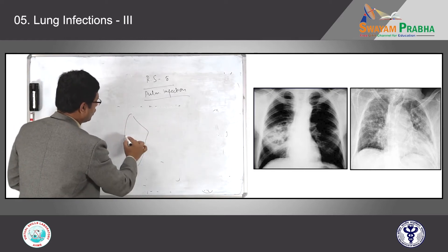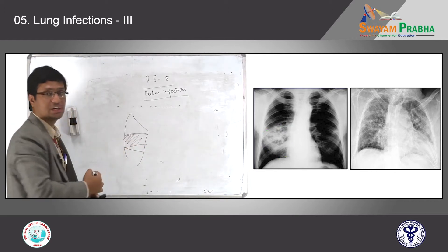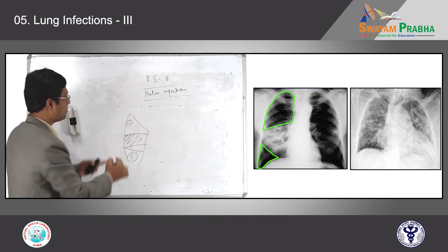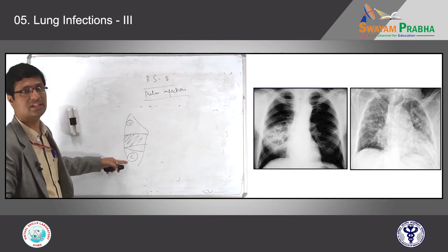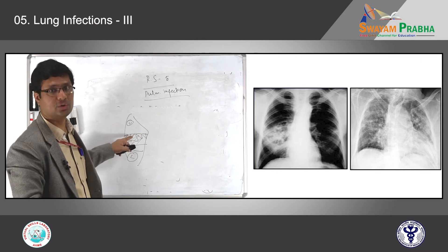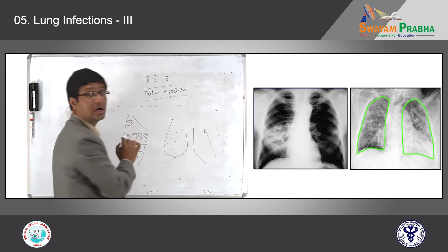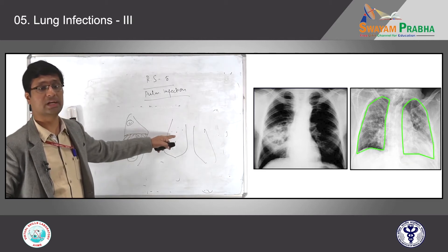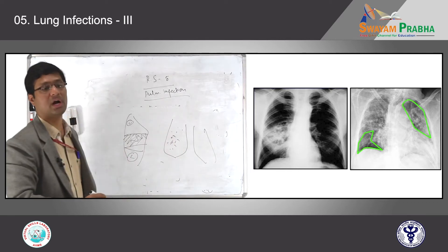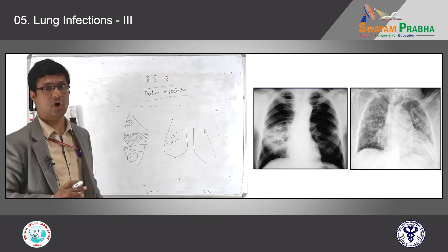On the X-ray: one side shows one lobe completely involved — you can see the haziness or consolidation in the right middle lobe, while the lower lobe and upper lobe are perfectly fine. The dark color represents air-filled spaces. This is how lobar pneumonia looks on radiology. In bronchopneumonia, both lungs show a nodular, dot-like opacity throughout, with both right and left lung involved, and intervening blackish areas representing uninvolved lung parenchyma.